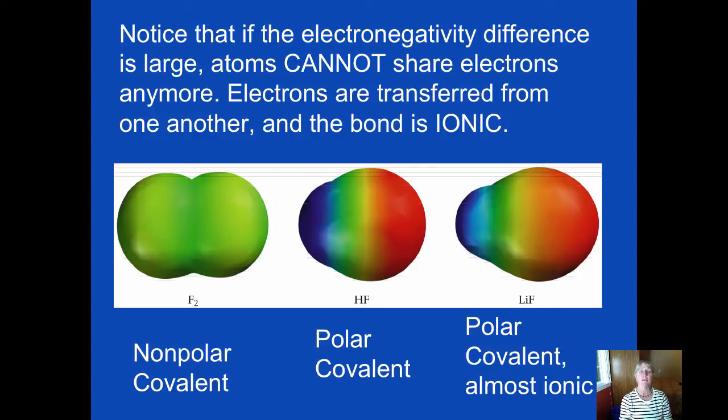So if the electronegativity difference is large, you're looking at the picture in the middle, a polar covalent bond and possibly molecule. And over on the far right, if the electronegativity difference is so great, they're not sharing anymore. Somebody, in this case the fluorine, rips away the one valence electron from the lithium. You have positive one and minus one ions, not a partial charge, a whole integer charge. And now you have electrostatic forces of attraction that pull those two ions together in an ionic bond.